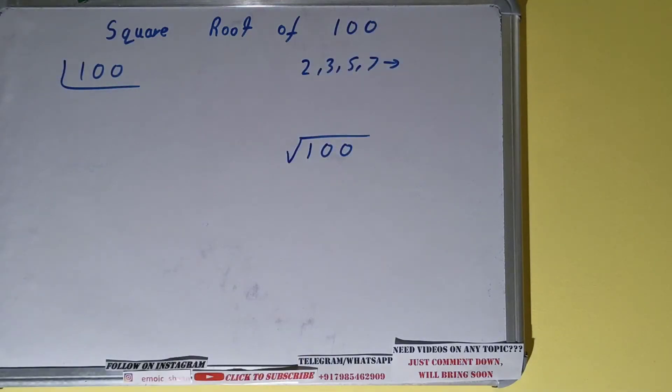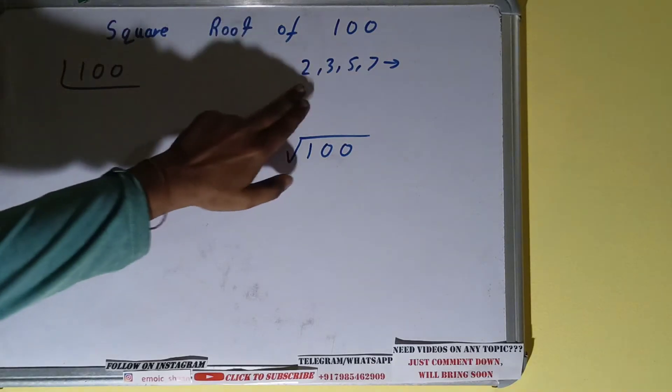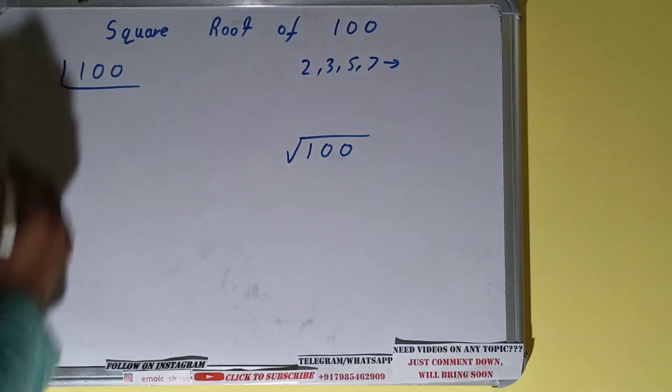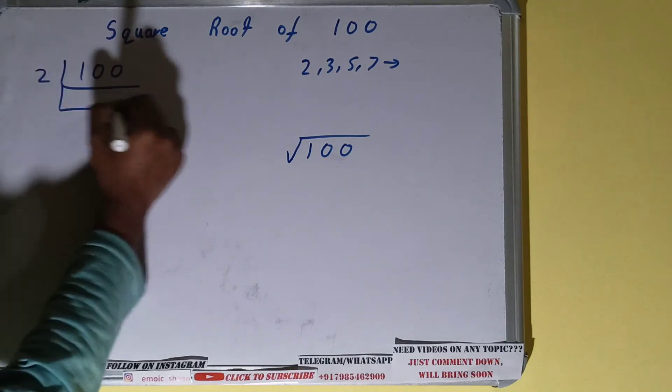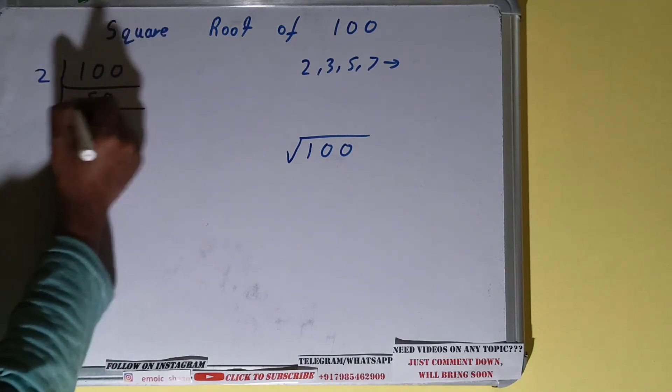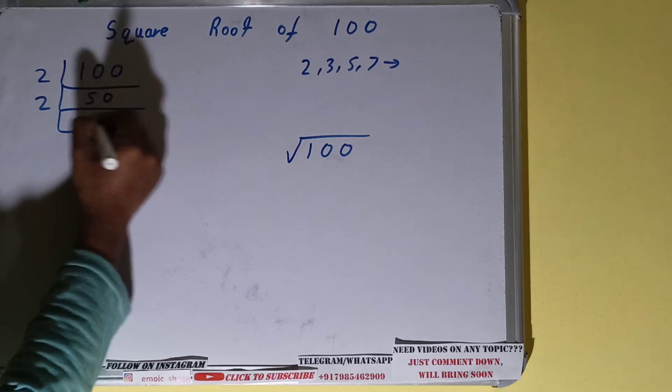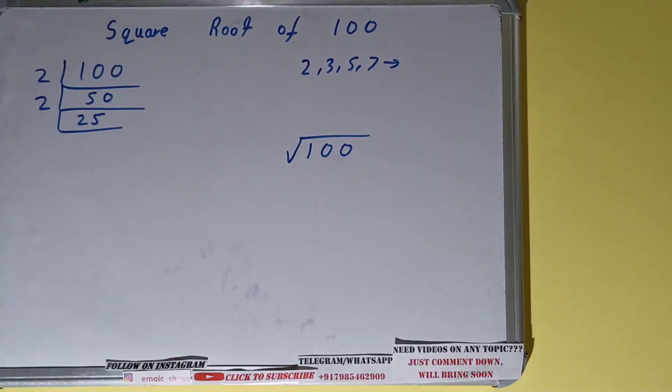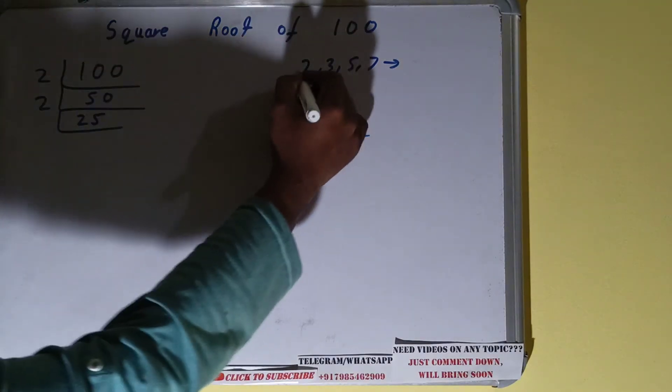We'll start with the lowest prime number and see if the number is divisible or not. Is 100 divisible by 2? Yes, it is divisible. So divide and you will be left with 50. 50 is again divisible by 2; you will be left with 25.